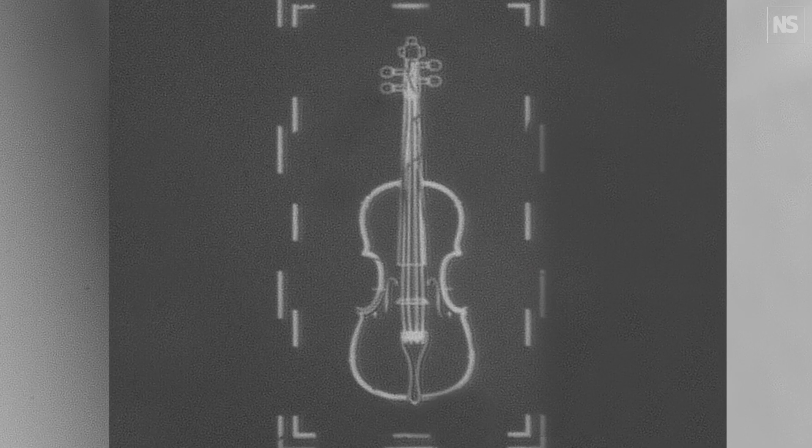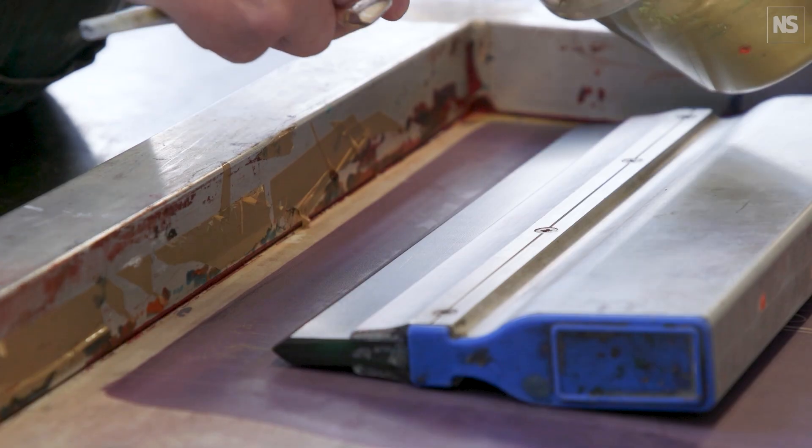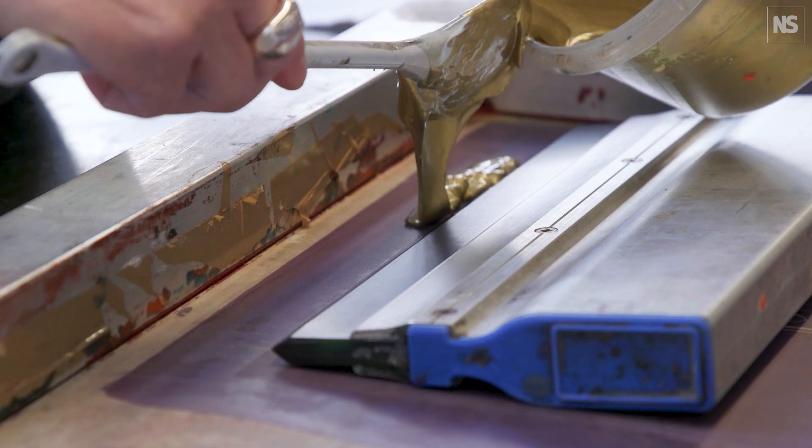Now that we have the platinum body of the world's smallest violin, we want to add the copper strings. And to do that, we just repeat all of the steps again.